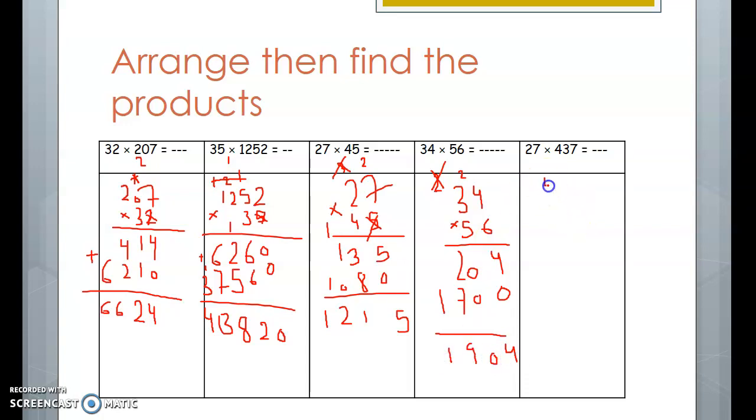The last one. 437 times 27. 7 by 7, 49. 7 by 3, 21 plus 4, 25. 7 by 4, 28 plus 2 equals 30. Don't forget to cross out the numbers that are written up.